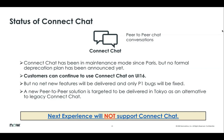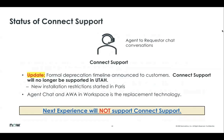As an alternate to Connect Chat, a new solution is being targeted to release in Tokyo. Our next experience is not going to support Connect Chat. Connect support is our legacy agent-to-requestor chat conversations product, and we are formally deprecating Connect support. The announcements are being sent to all customers, and you can also find this information in our community channel. We are no longer supporting Connect support, and after Utah there won't be any support at all. New installation restrictions have already started in Paris, and we are announcing in San Diego for all customers to move on to alternate options.